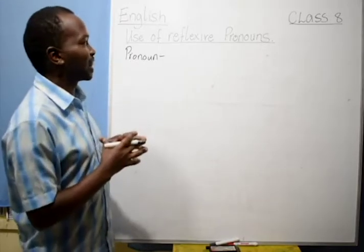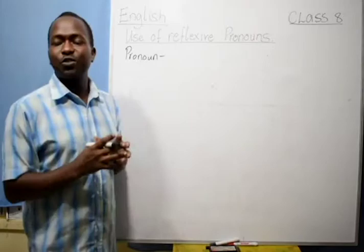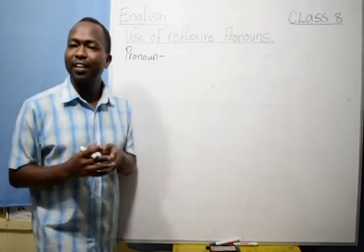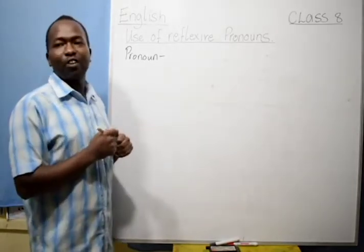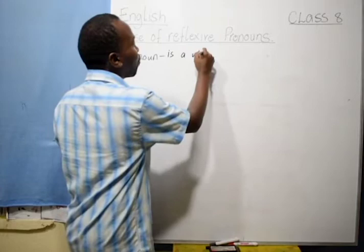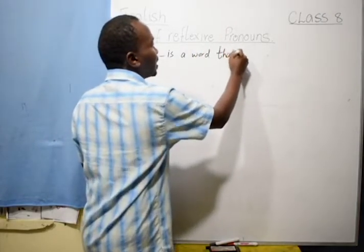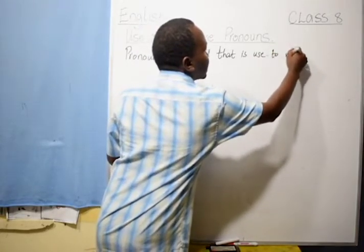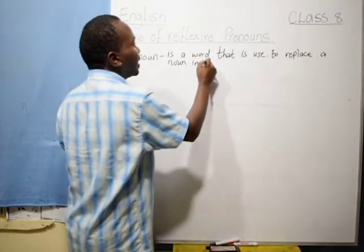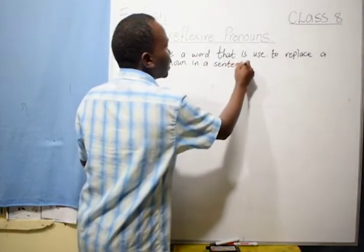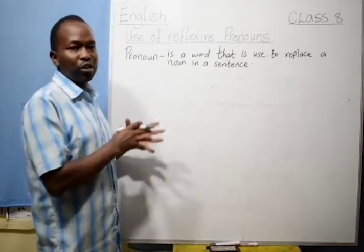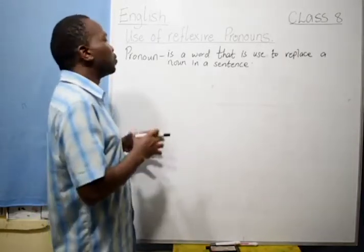Aha, very good, very good. That's a good attempt. Another pupil can try to give us either a different meaning or support the same. Yes, try. Aha, very good. So, all of you have given the correct meaning of the word pronoun. A pronoun is a word that is used to replace a noun in a sentence. It is used to replace a noun in a sentence. Instead of keeping repeating that noun that you are talking about in a sentence, we use a pronoun.